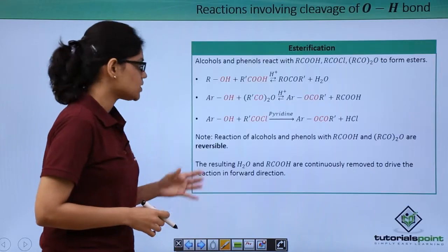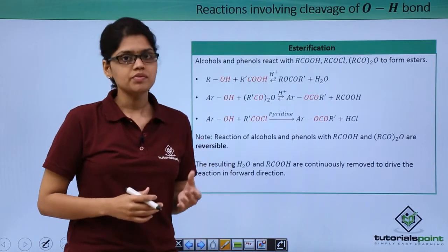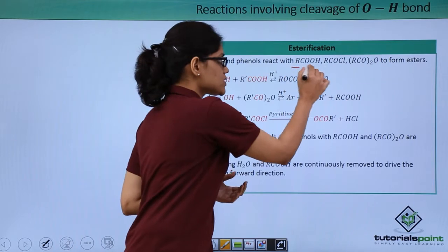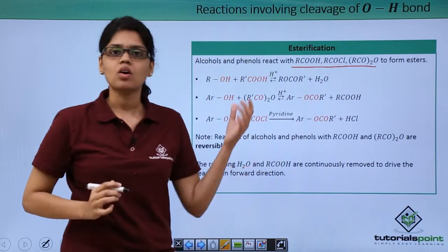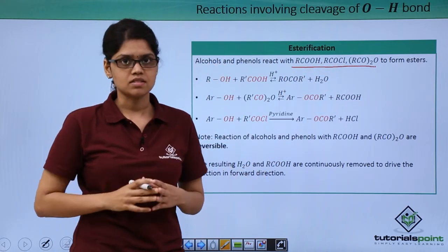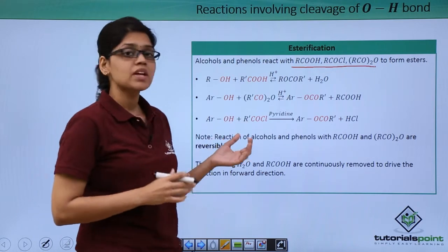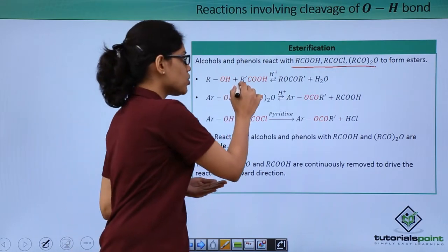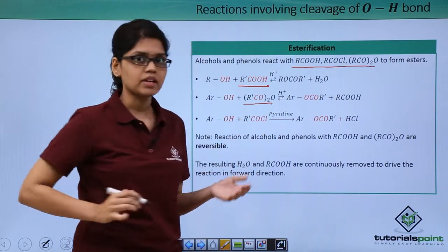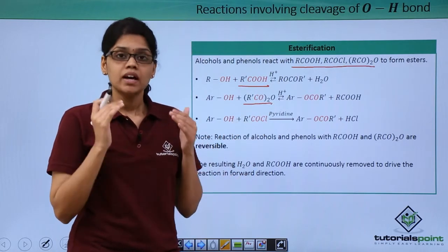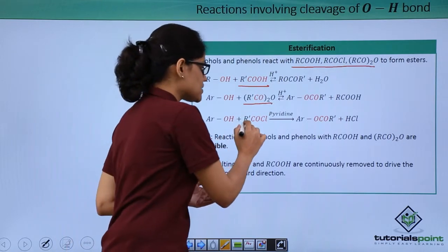So what happens in esterification is that alcohols or phenols react with carboxylic acid, acid chloride, or acid anhydrides to give esters. As you can see here, the reaction of alcohol or phenol with carboxylic acid and acid anhydride are reversible in nature, in contrast to the reaction with acid chloride.